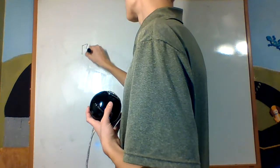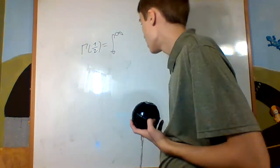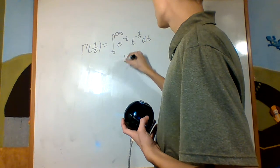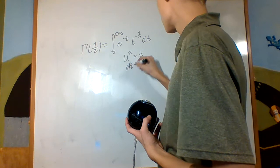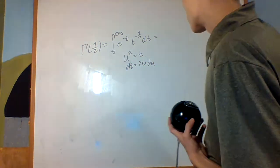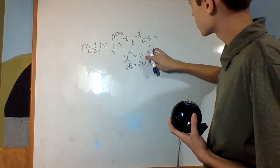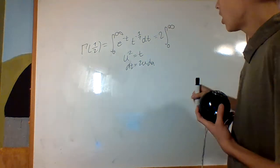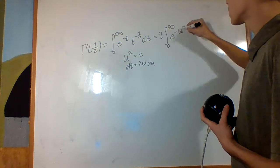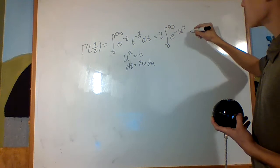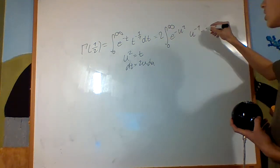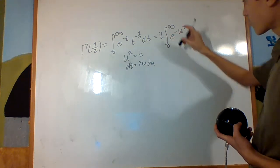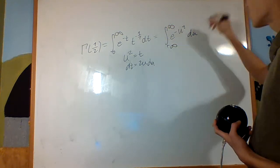Now let's evaluate gamma of 1 half. It's the integral from 0 to infinity of e to the negative t times t to the negative one half dt. Making the substitution u squared equals t, so that dt equals 2u du, and t to the negative one half equals u to the minus 1, everything simplifies: u to the minus 1 times 2u cancels to give 2 times the integral from 0 to infinity of e to the negative u squared du. Since e to the negative u squared is an even function, that 2 converts it to the integral from negative infinity to infinity of e to the negative u squared du, which equals the square root of pi. So gamma of 1 half equals the square root of pi.